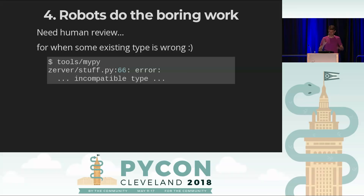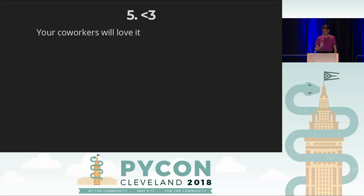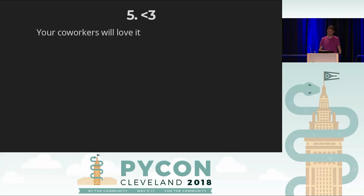Those are the four key principles. There's a secret fifth one: expect your co-workers to love it once they see it in action. Sometimes in the Python community there's an 'oh, types, those are terrible' reaction — but I've never heard that from somebody at Dropbox. We've had plenty of complaints that the tool isn't fast enough — it's faster now — or that it has bugs — they're fixed. Plenty of complaints of 'I want more types, can you give me more sooner?' We've never heard a complaint of 'I wish we weren't doing types at all.'